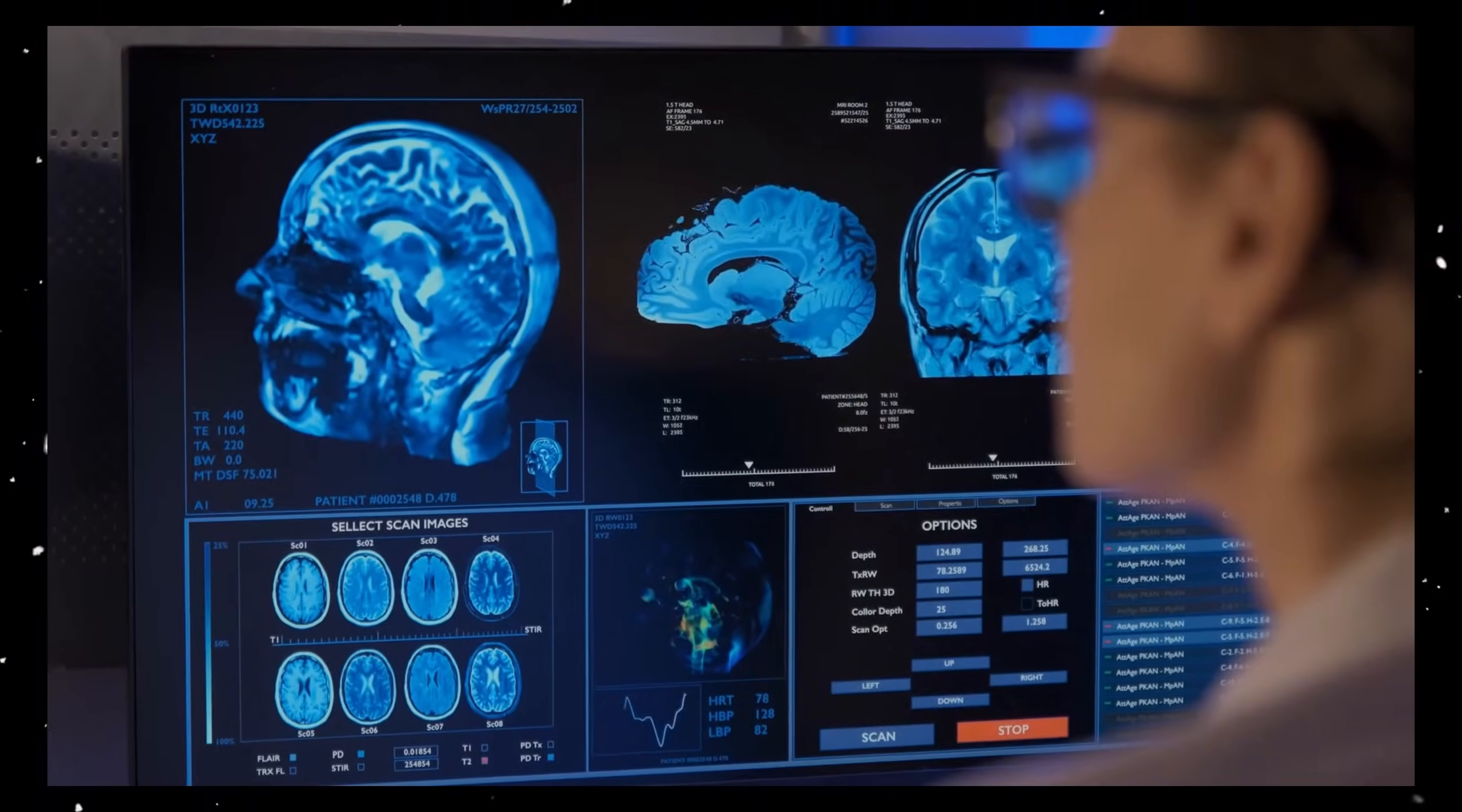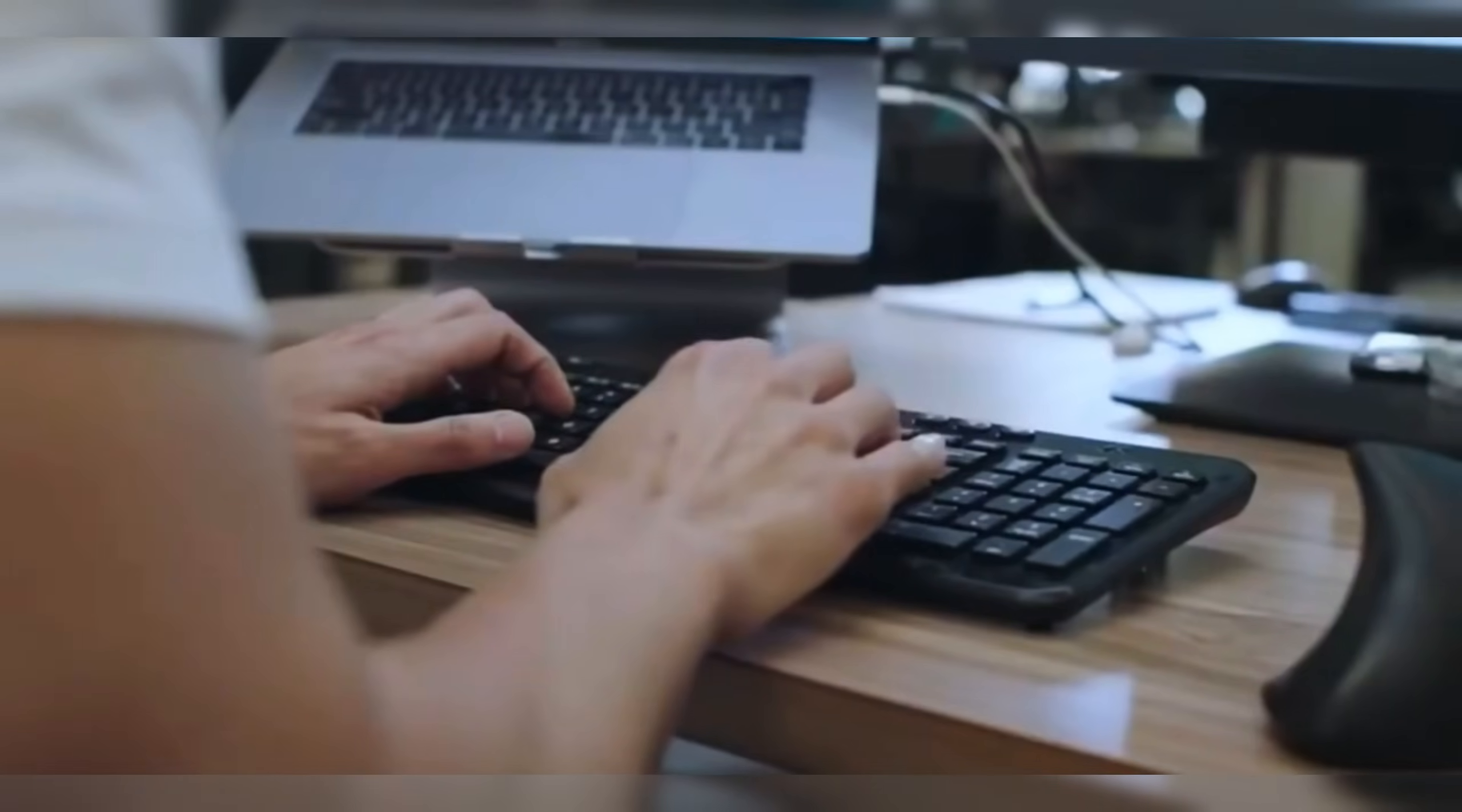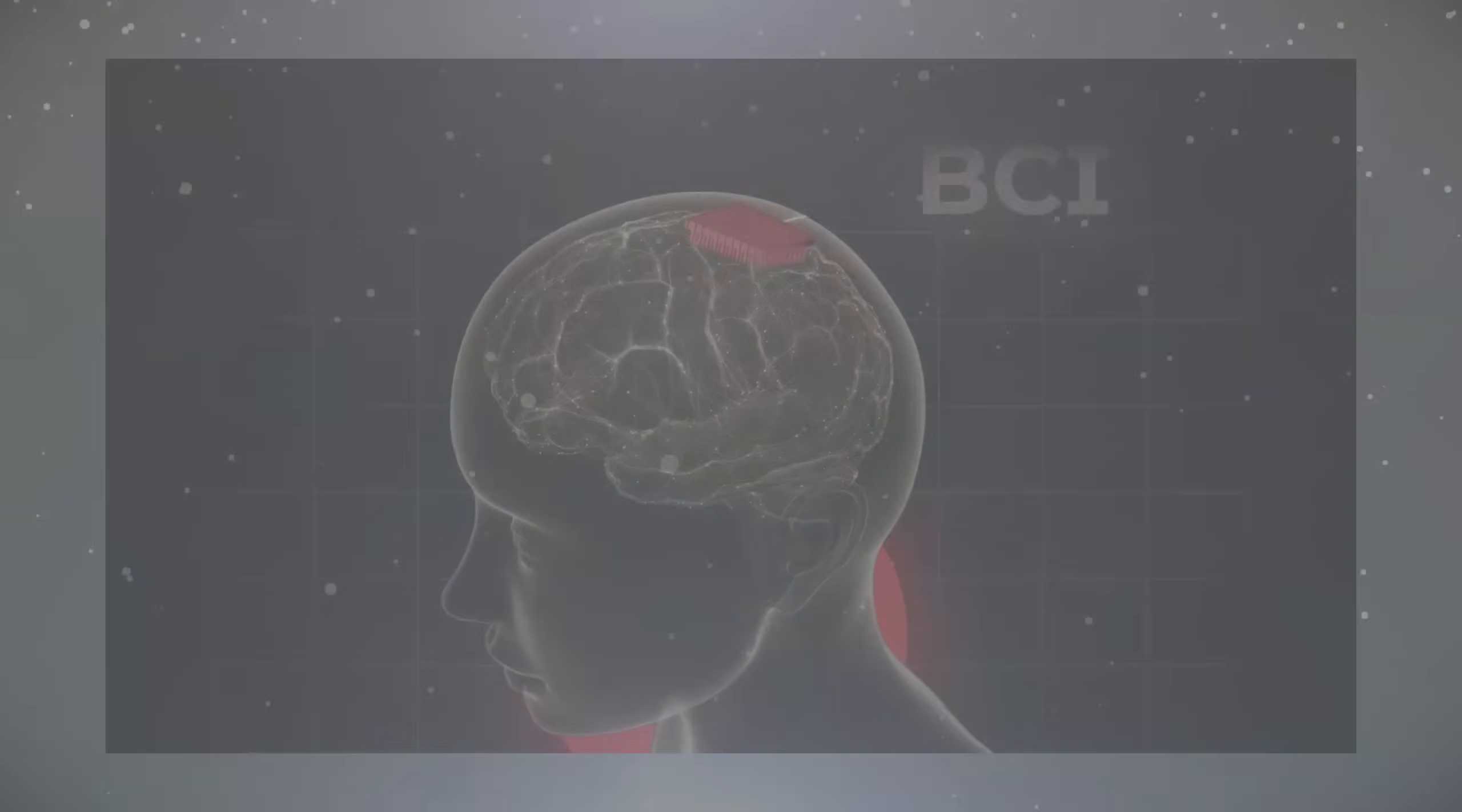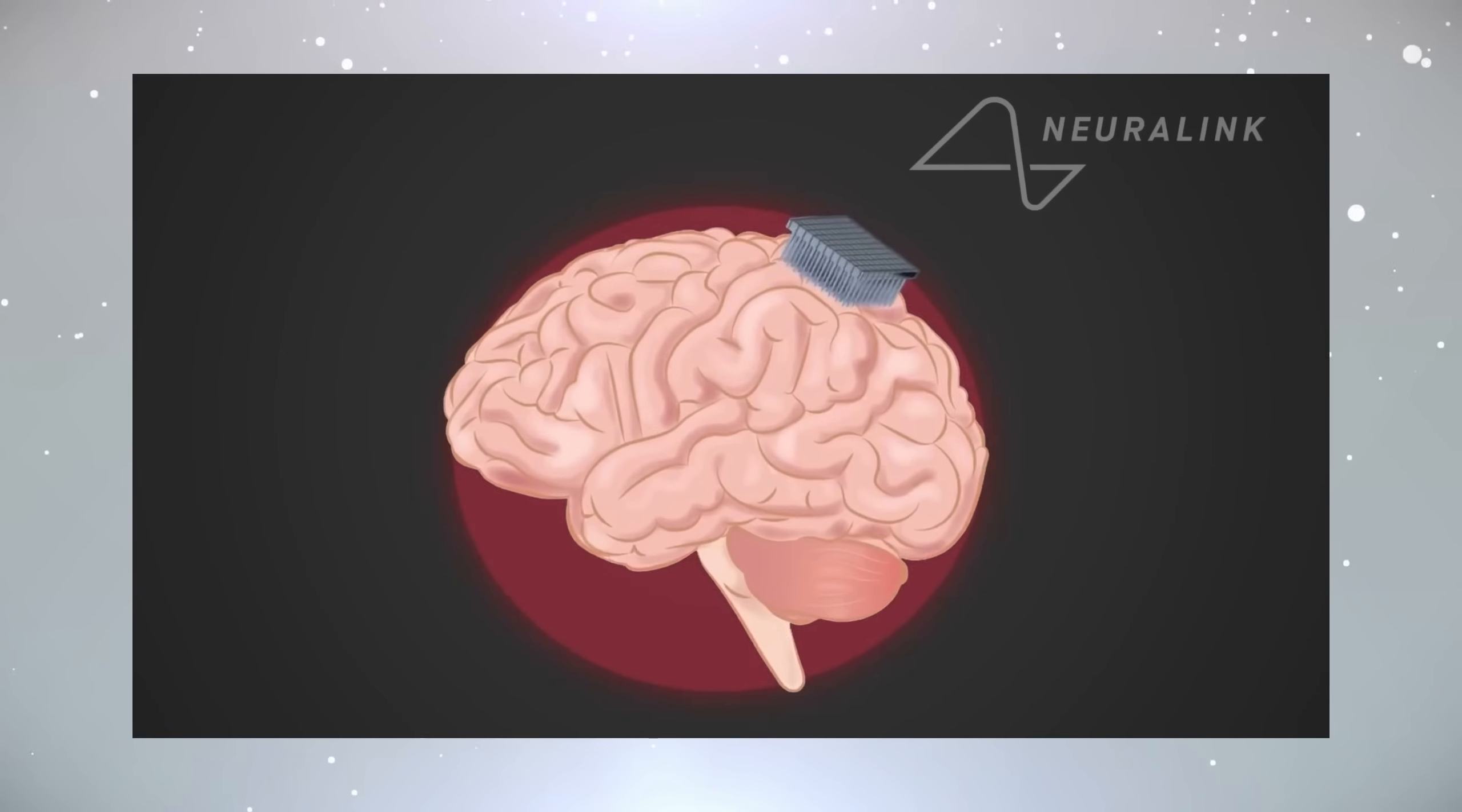Even though they haven't used all 1,024 possible electrodes, having about 40% active is a good start, and right now, about half the threads are working in the second patient's brain. Nolan, the first patient, had some electrodes move out of place, but he could still set records using the brain-computer interface, BCI, with just 10 to 15% of his electrodes working.